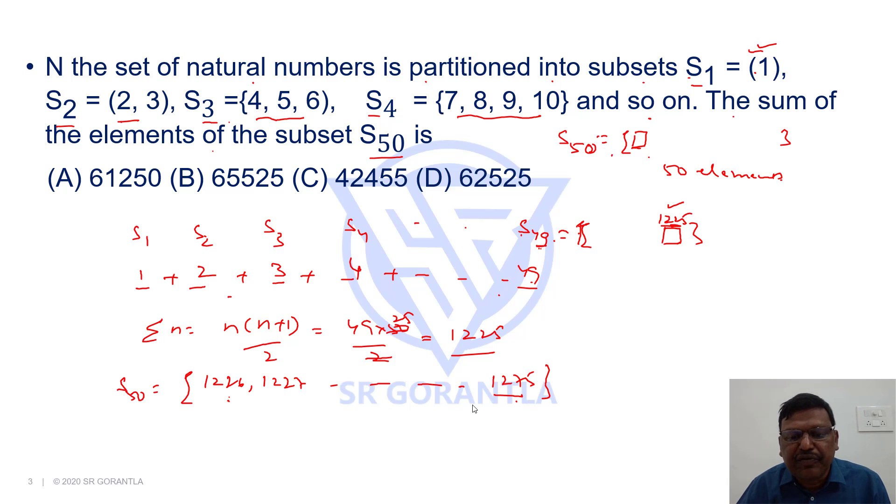We need sum of all these 50 elements. If you see, they are 1226 plus 1227 and so on. It's like an arithmetic progression because there is a common difference, they are consecutive integers, natural numbers. There is a common difference of 1.